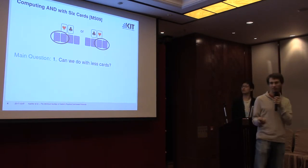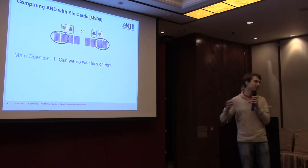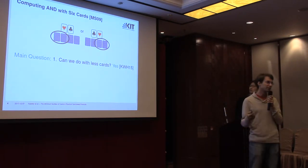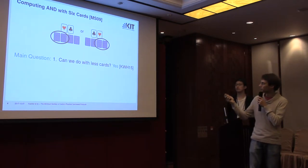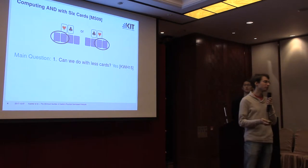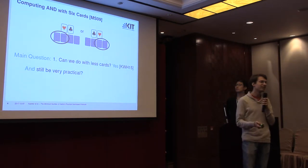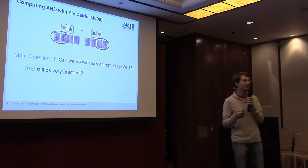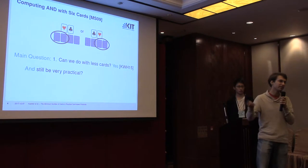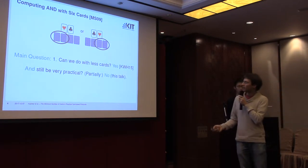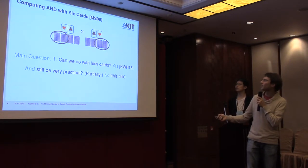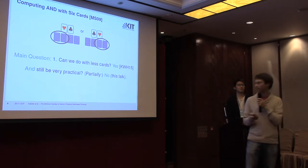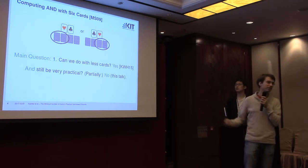Our main question is: can we do this with less than six cards? We need at least four cards for encoding the inputs, but maybe we don't need the two helping cards. We already knew there's a four-card and a five-card protocol, but the remaining question is whether they can still be practical. Those protocols are very unpractical — not usable in a didactic context or really in practice. We give a partial no answer: for some meaning of 'practical', we can show there's no five-card or four-card protocol, so the six-card protocol we just saw is optimal.